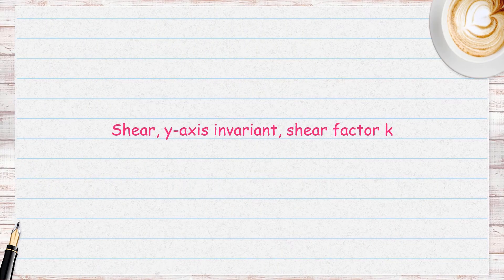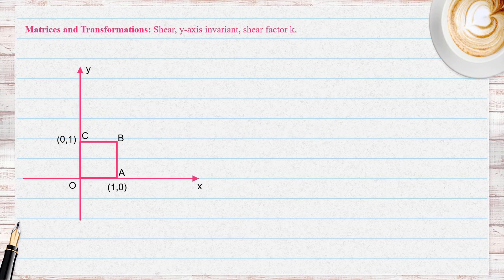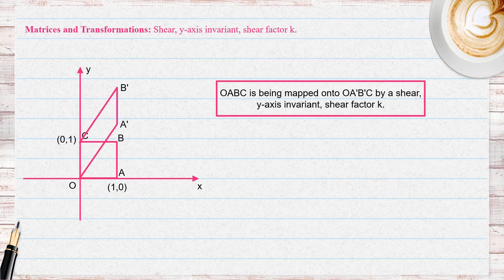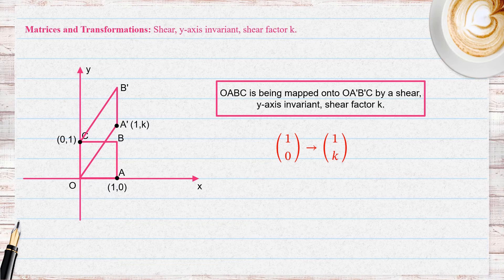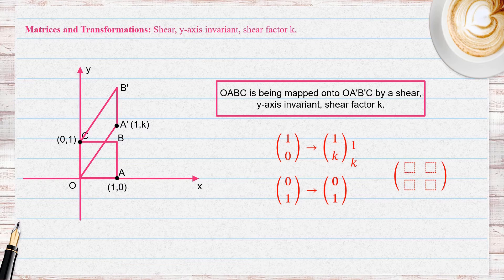We can also talk about a shear parallel to the y-axis with shear factor K. In this case, the y-axis is the invariant line. The unit square OABC is mapped onto the shape O A' B' C' by a shear parallel to the y-axis with shear factor K. The point (1, 0) is mapped onto the point (1, K), and the point (0, 1) is mapped onto itself since it is on the invariant line. So we can derive the matrix representing a shear parallel to the y-axis with shear factor K.